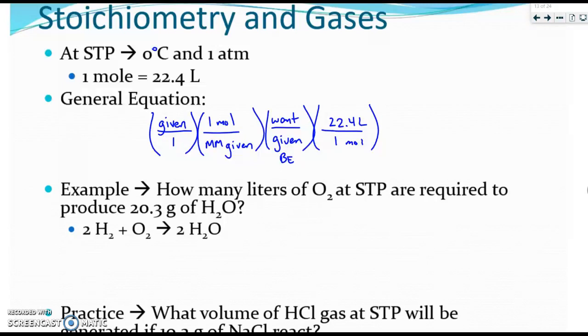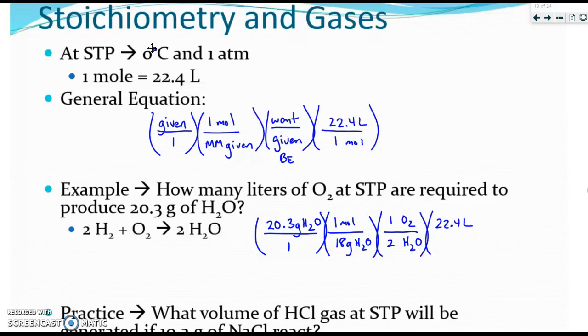Let's solve this first problem. So you put your given grams of water over 1. 1 mole over its mass of 18 grams. If you want oxygen, you have 1 O2 for every 2 waters. And then your last step is 22.4 liters always. And then you solve and you should get 12.6 liters of oxygen. We will continue the practice problem in the next video.